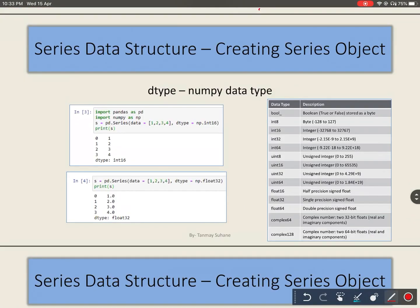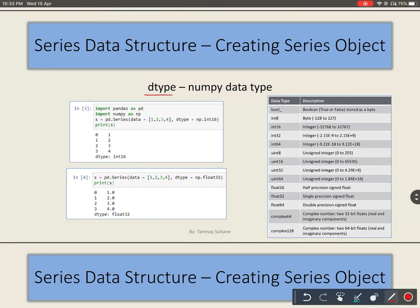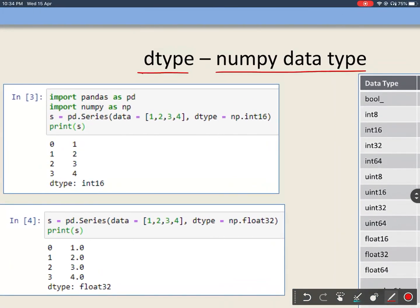Now we will see how we can assign our own data type to series object data. So as we saw, there is one parameter dtype in series function. We can provide any numpy data type to dtype and that numpy data type will be assigned to these data.